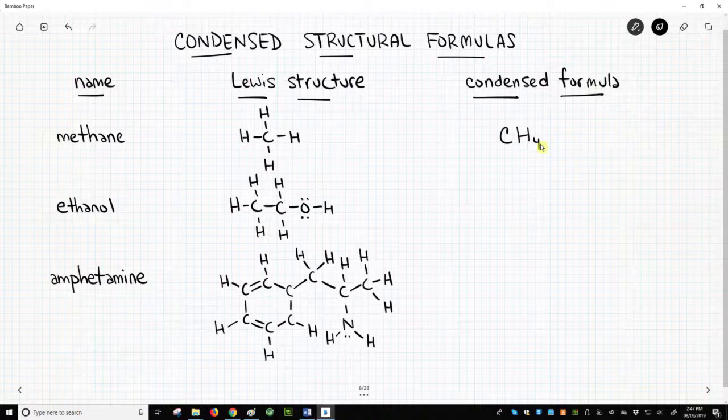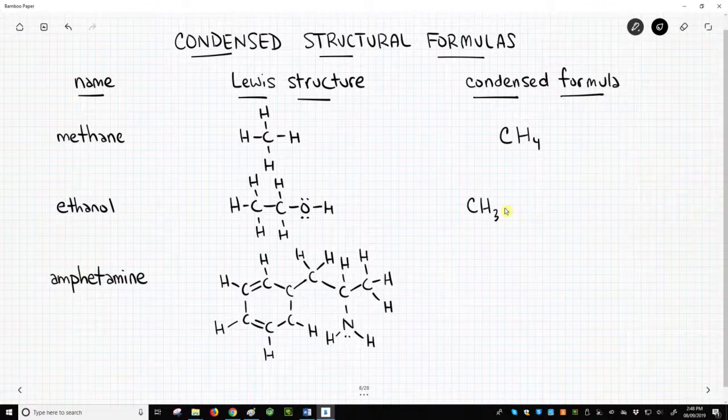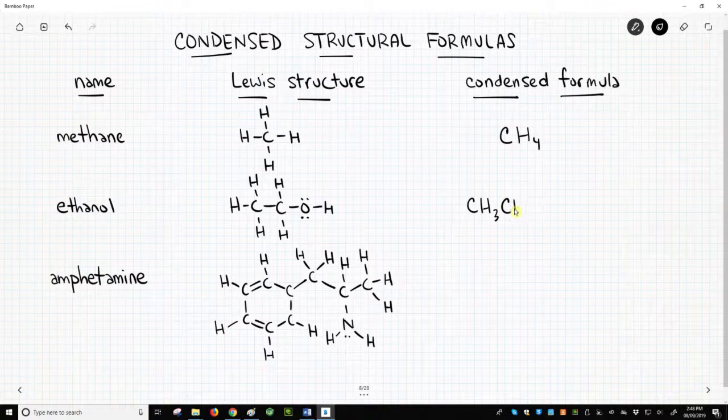In ethanol, we'll start with carbon again. It has three hydrogens. Then the second carbon has two hydrogens. Finally, we have the oxygen with one hydrogen.